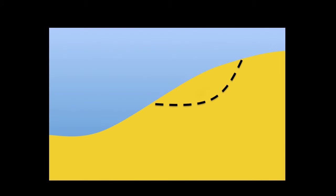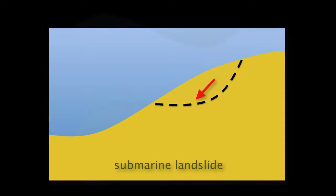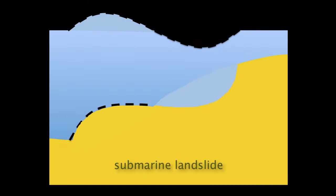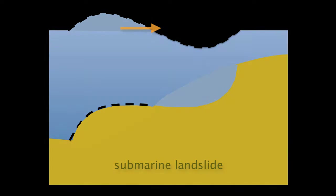When material on a submarine hillside moves downhill, it leaves a void that's filled by a drop in the sea surface. By the same token, the area where the landslide material has accumulated results in a rise in the ocean surface. This forms a wave that only has to move out from this point on.